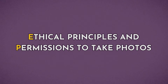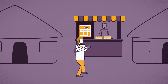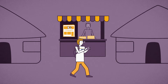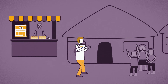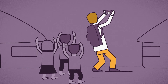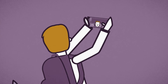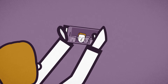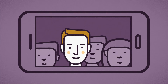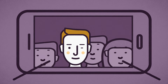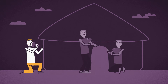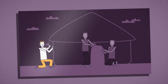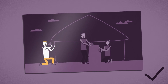Ethical principles and permissions to take photos. Make sure that the person understands who is taking their picture, why and where it will be used, and of course they need to agree to have their picture taken. Be especially careful when taking pictures of children and posting them on social media. Try to opt for images which show volunteers working together with local communities.